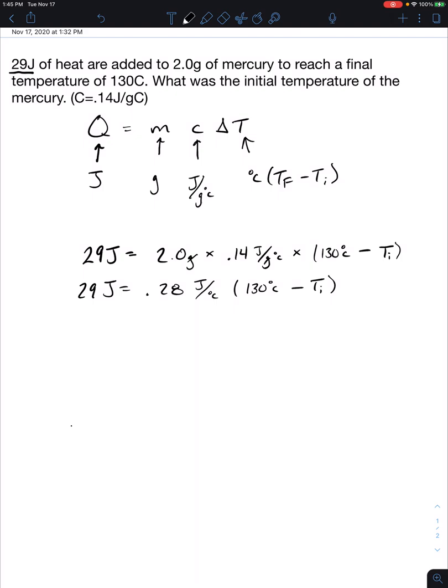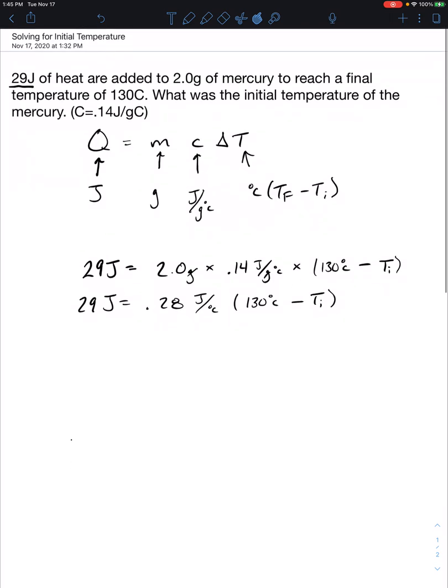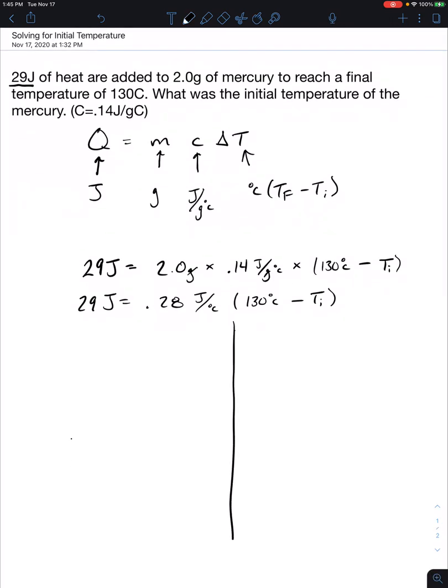Now I'm going to split my screen. I'm going to show you two routes that you guys can go to get this question right. So I'm going to rewrite this equation. So we're going to start with the easy route. So it's going to be 29 joules is equal to 0.28 joules per degrees Celsius times 130 degrees Celsius minus the initial temperature Ti.